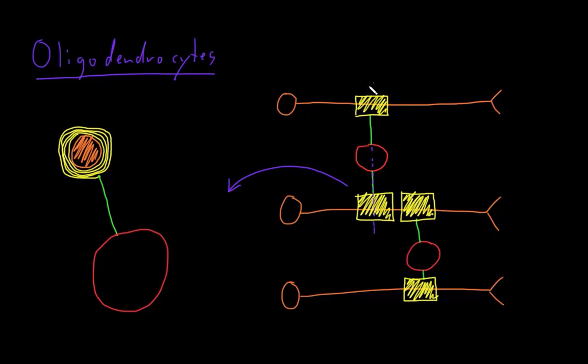In addition to this function of creating the myelin sheath, oligodendrocytes also appear to influence neurons and other glia, and vice versa, through exchange of a variety of substances.